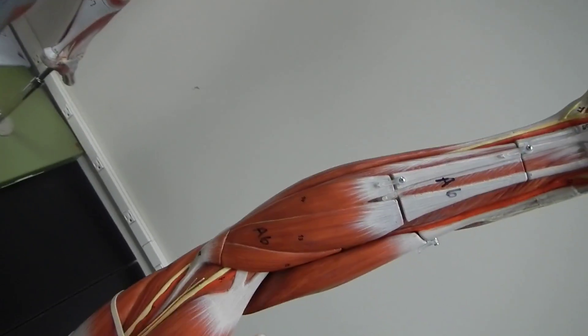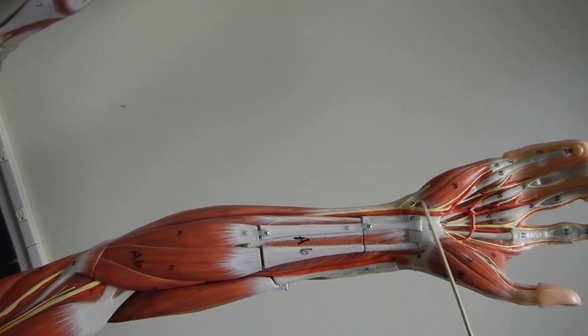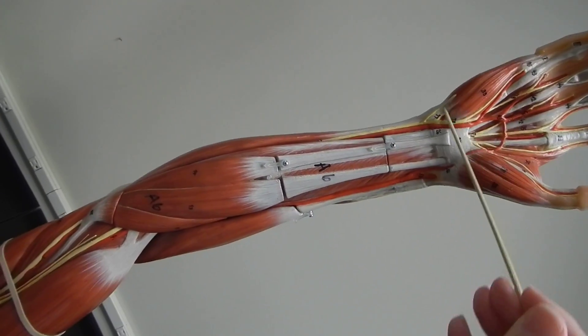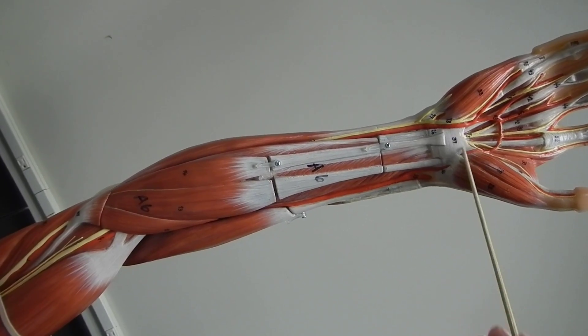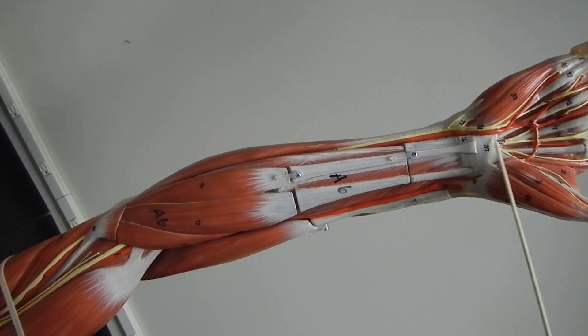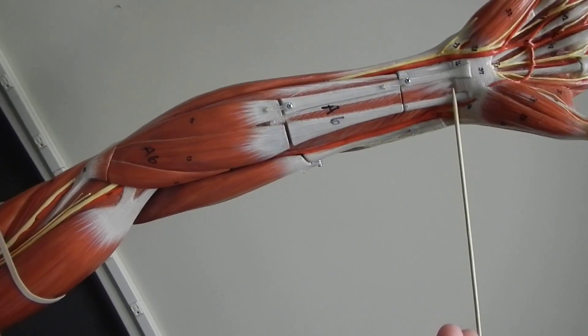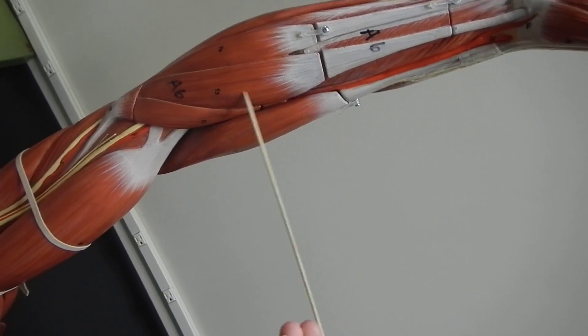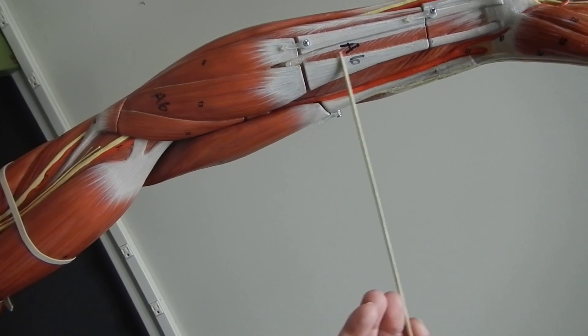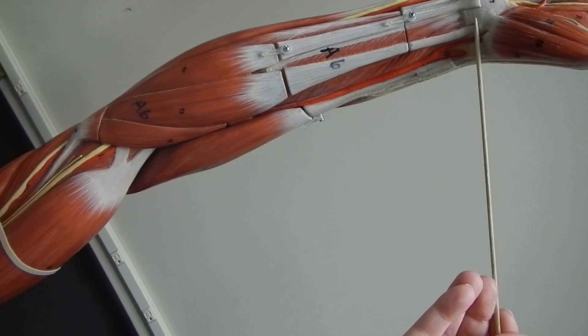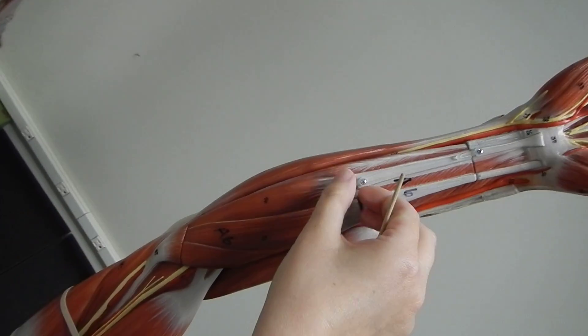Now we're on the palm side. This band right here is flexor retinaculum. This guy that's going right into the palm is palmaris longus. The one next to it here is flexor carpi radialis.